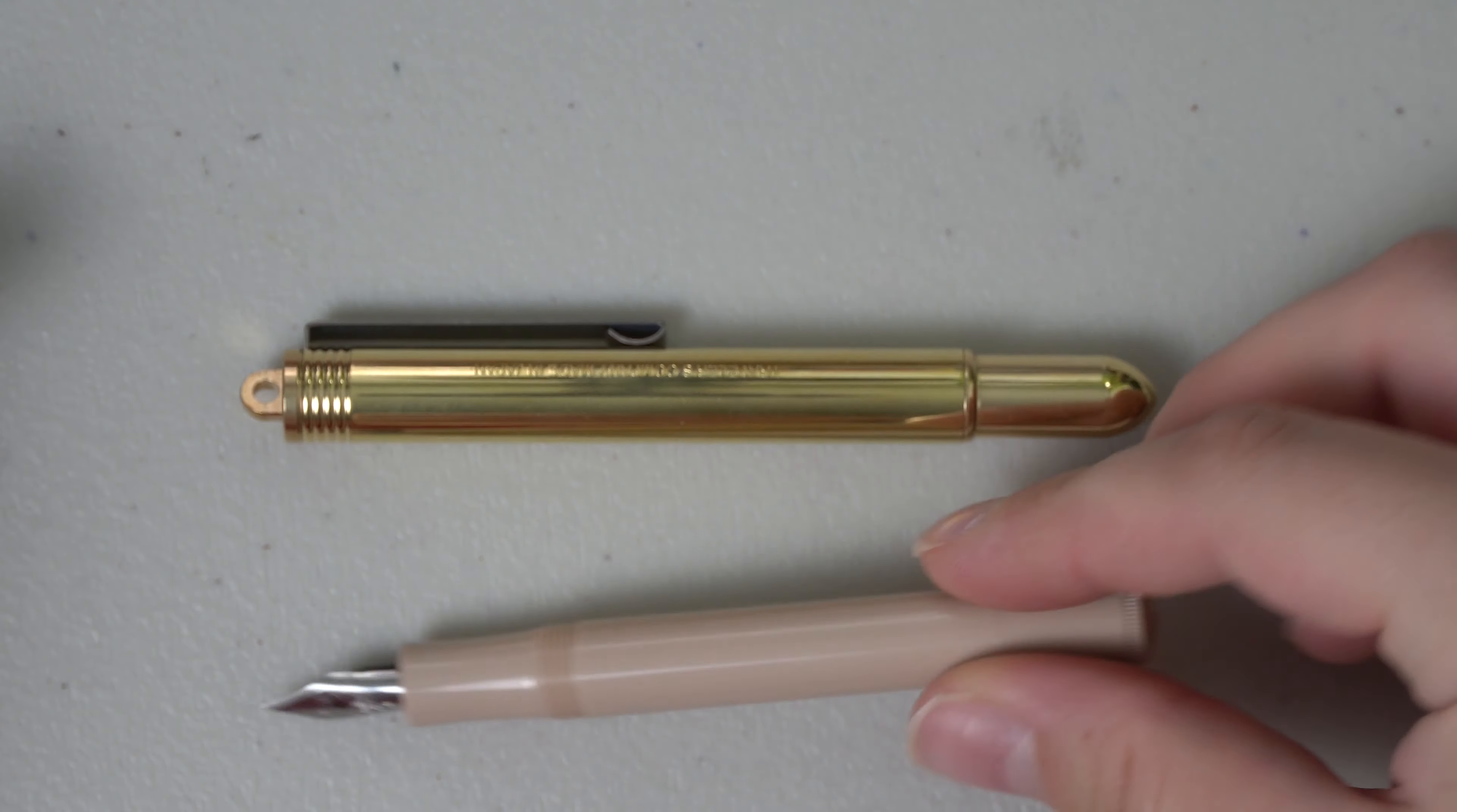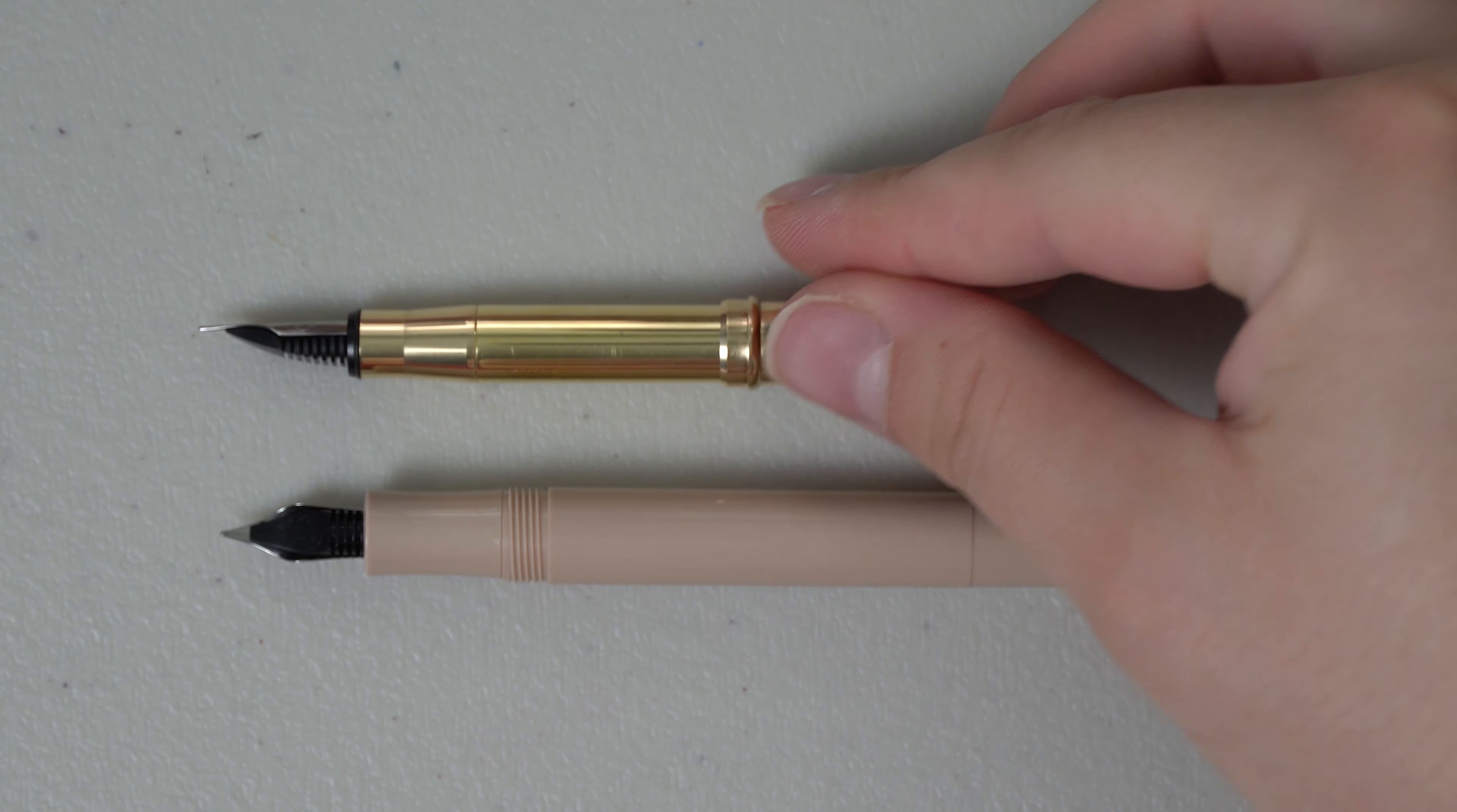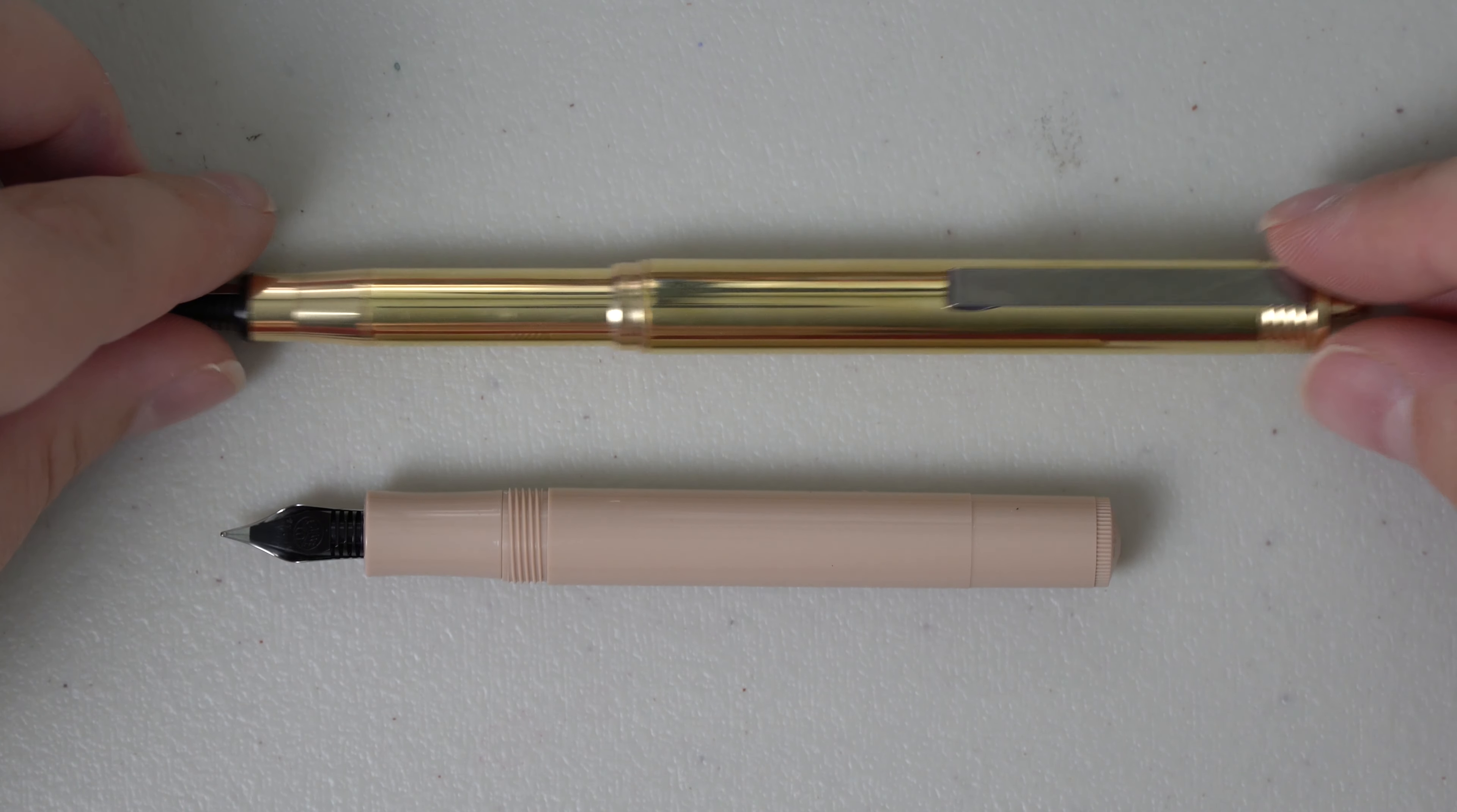So the Kaweco does unscrew. So this is it unposted. Let's hope that it doesn't roll away. And then there's the Traveler's Company unposted as well. So as you can see, Traveler's Company is very much a teeny tiny little pen, perfect for traveling.